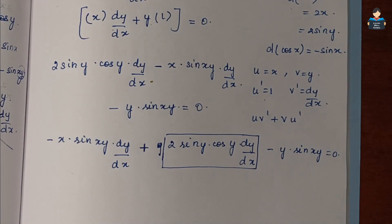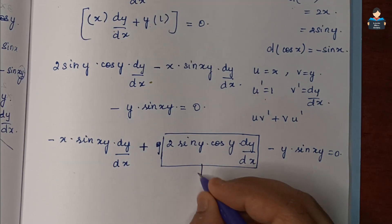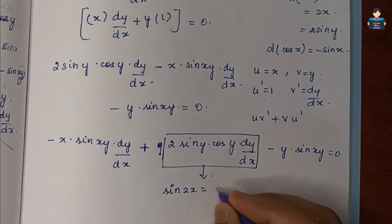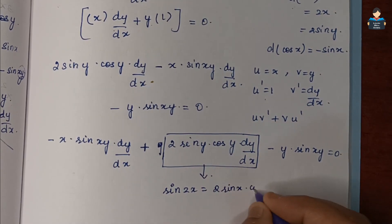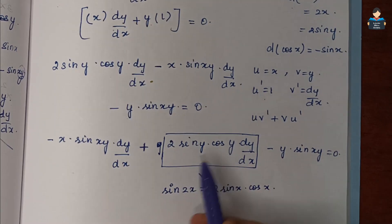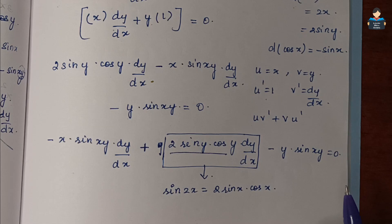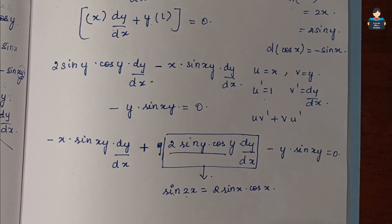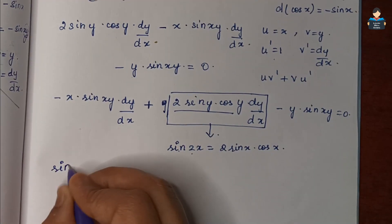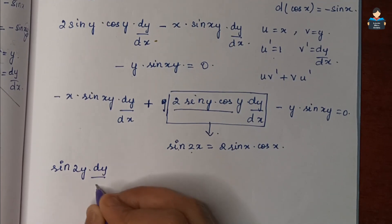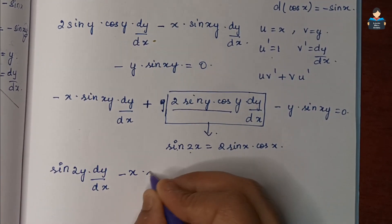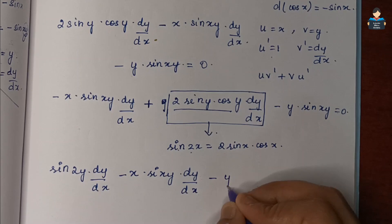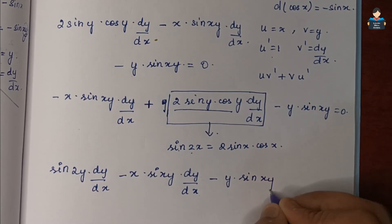Applying the identity 2 sin y cos y = sin 2y, we replace accordingly. The full equation becomes: sin 2y · dy/dx - x · sin(xy) · dy/dx - y · sin(xy) = 0.